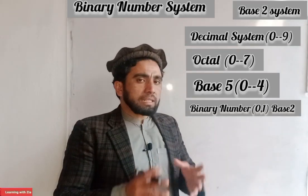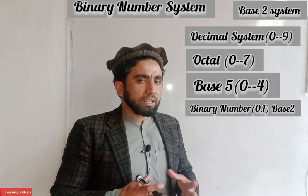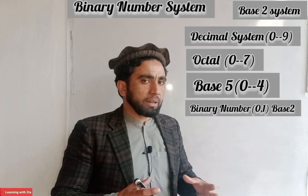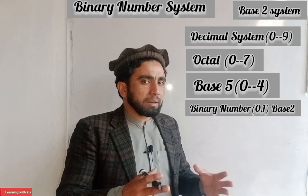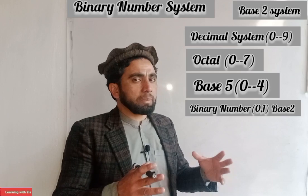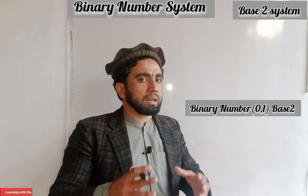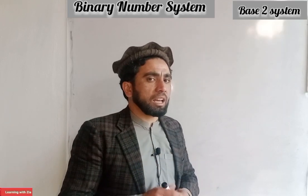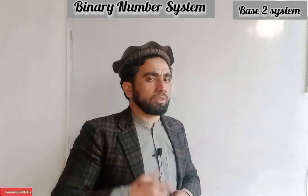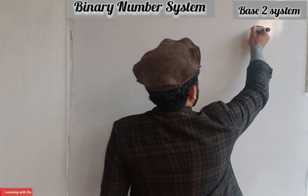The binary number system uses only 0 and 1. The binary number system as well as 0 and 1 — the banner of numbers can be one, for example.